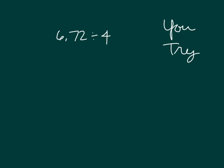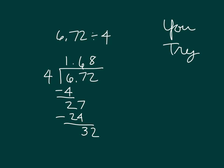Your turn to try. Use a standard algorithm to solve 6.72 divided by 4. Pause the video while you do your work. 4 goes into 6 one whole time. 1 times 4 is 4. 6 minus 4 is 2. Bring down the 7. 27 divided by 4 is 6 because 6 times 4 is 24, and 27 minus 24 is 3. One more digit to bring down the 2. 32 divided by 4 is 8. So we have our decimal point there, and it's 1.68 is our answer.